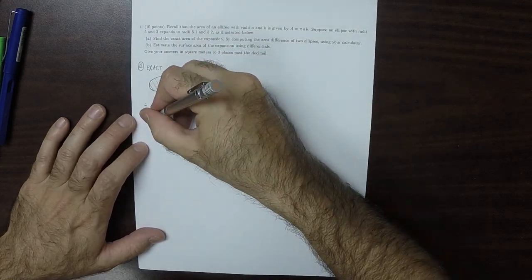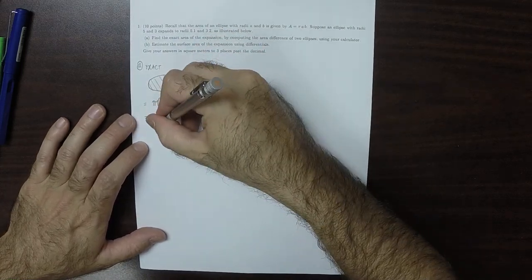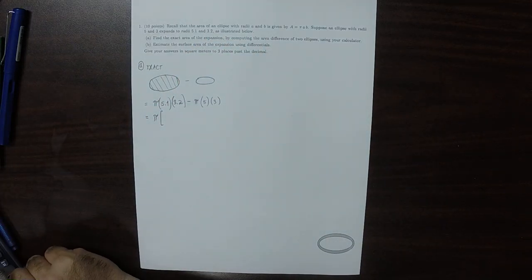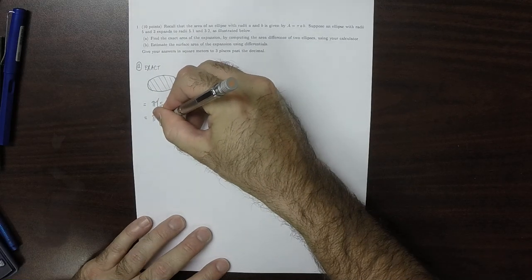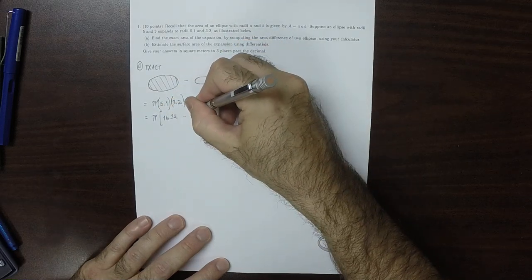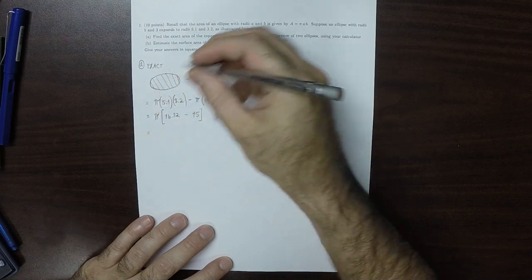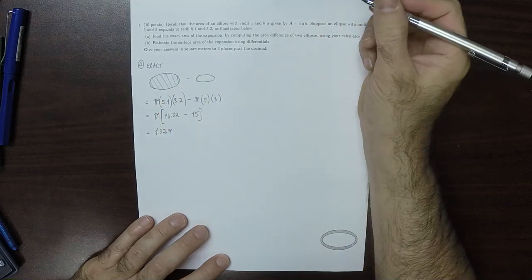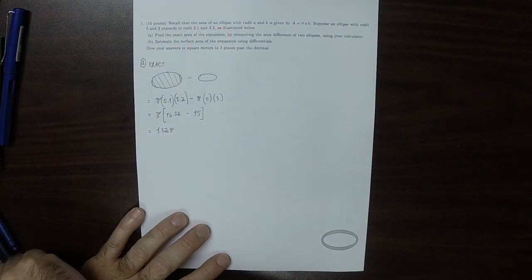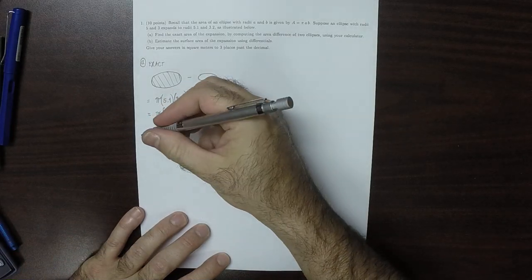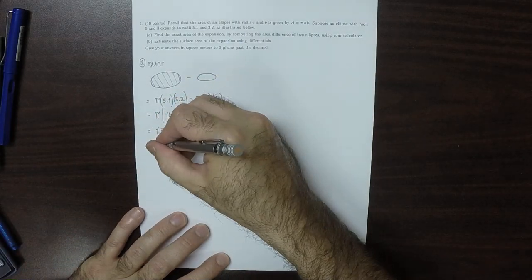Factoring out the pi, that is 16.32 minus 15, which is 1.32 pi. And multiplying that out, that is 4.147, rounded to three decimal places.